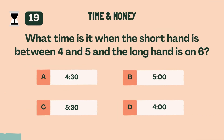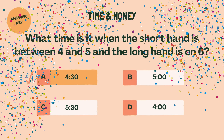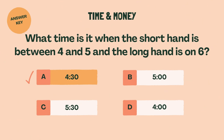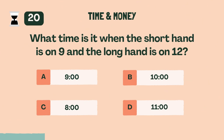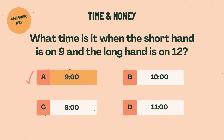What time is it when the short hand is between 4 and 5 and the long hand is on 6? A, 4:30. What time is it when the short hand is on 9 and the long hand is on 12? A, 9 o'clock.